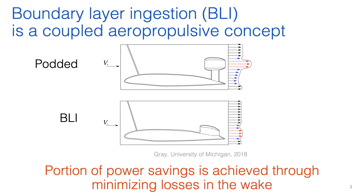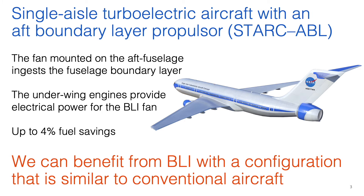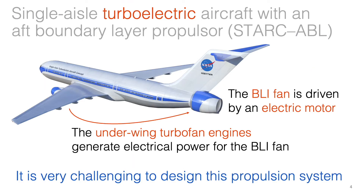Boundary layer ingestion, or BLI, is a coupled aeropropulsive concept where propulsors ingest the boundary layer of the airframe, which results in improved aeropropulsive performance. One configuration that uses BLI is the STARC-ABL concept introduced by NASA, which uses a fan on the aft fuselage to ingest the fuselage boundary layer. This BLI fan is driven by an electric motor, and the electrical power for this system is supplied by the underwing engines.